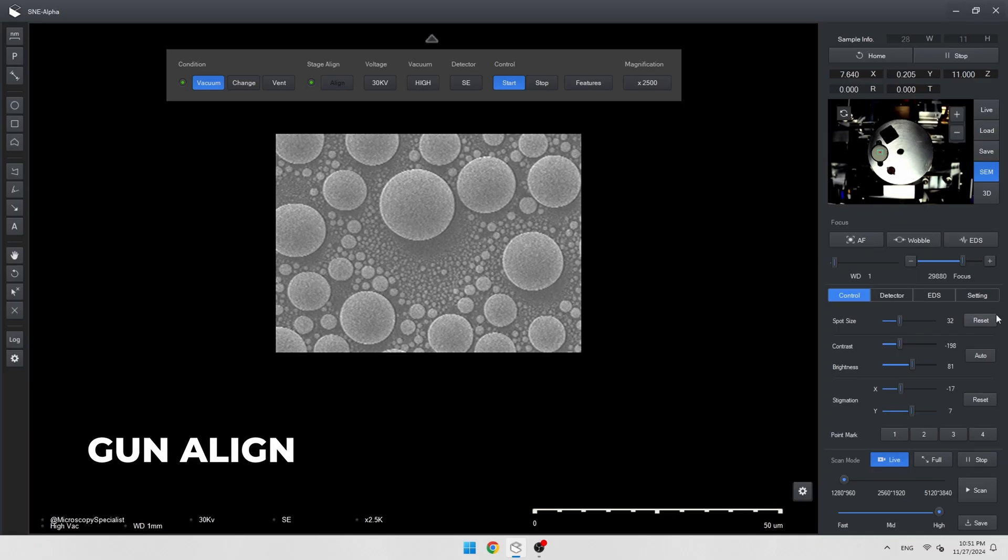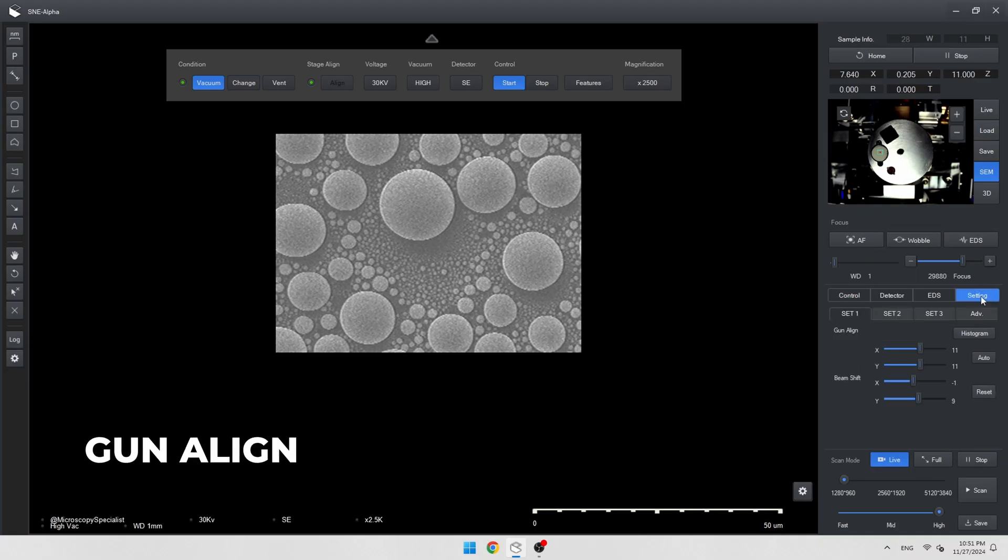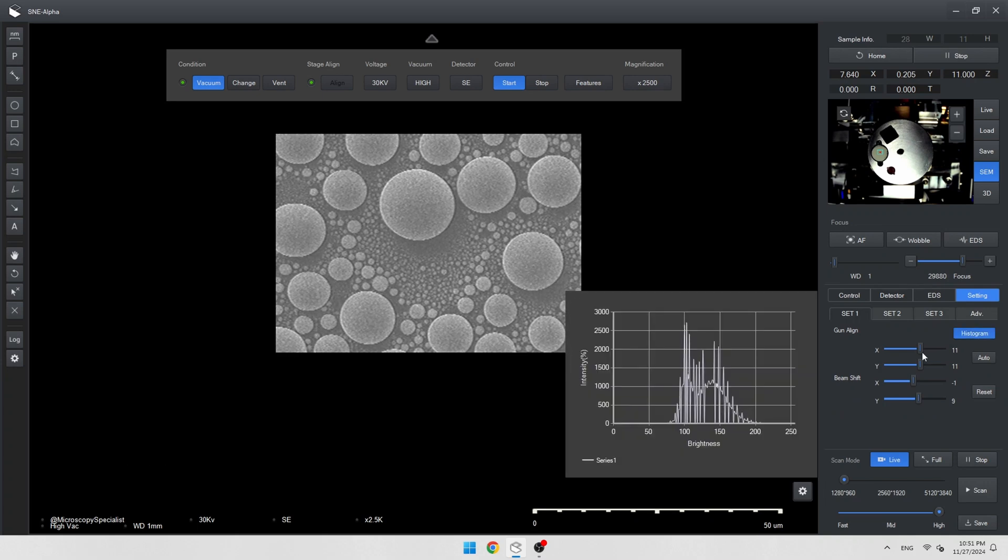Okay, let's adjust the beam. We need to align the beam to increase the intensity. We can check the histogram for better alignment.